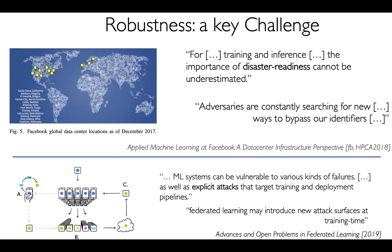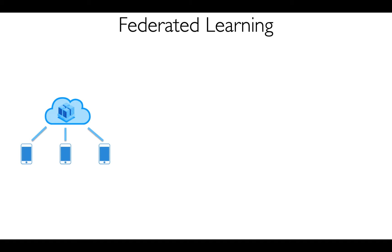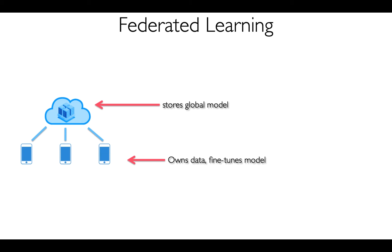In this work, we try to understand the extent of these system vulnerabilities to adversaries. In Federated Learning, a global model is stored at the central server or cloud provider, and training occurs in a decentralized manner across a number of edge devices. Each of these edge devices owns a local and private data set.